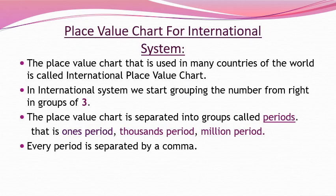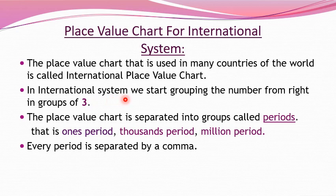Now that we have learned the place value chart for the Indian system, let us learn the place value chart for the international system. The international place value chart is followed in many foreign countries of the world. In the international system, we do not use crore, ten crore, or lakhs. Instead, we have different places. In the international system, we start grouping the number from the right in groups of three only — there are no groups of two. The place value chart is separated into periods: ones period, thousands period, and a new one you are learning — the millions period. Every period is separated by a comma.